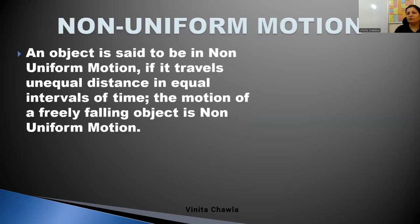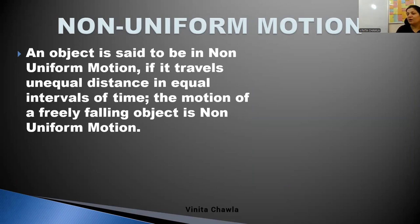Non-uniform motion is when an object covers unequal distance in equal intervals of time, or it covers equal distance in unequal intervals of time, however small.